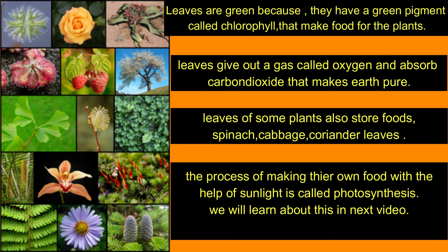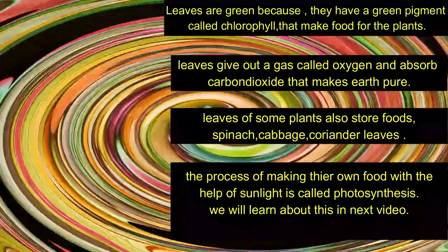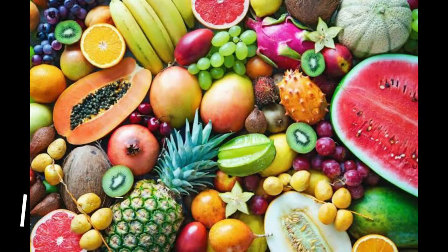Leaves give out a gas called oxygen and absorb carbon dioxide, which makes the earth pure. Leaves of some plants also store food, such as spinach, cabbage, and coriander. The process of making their own food with the help of sunlight is called photosynthesis.